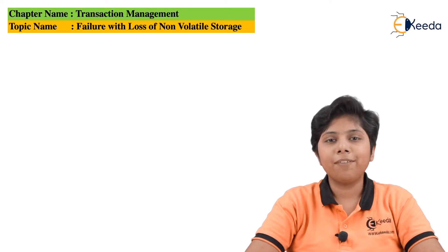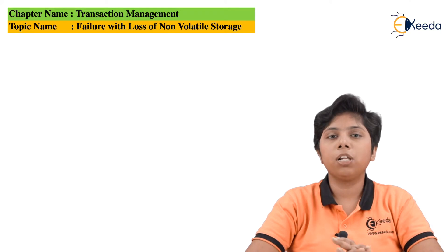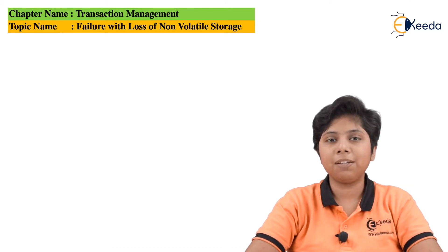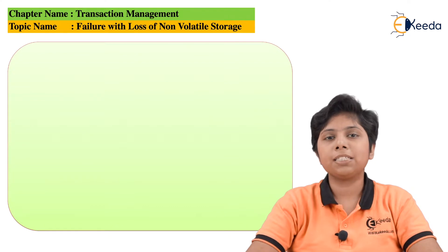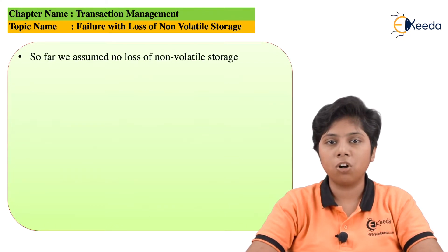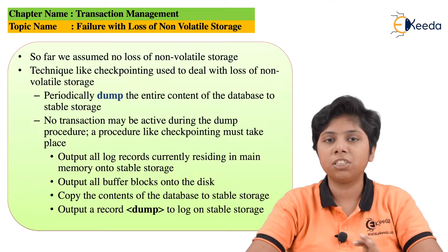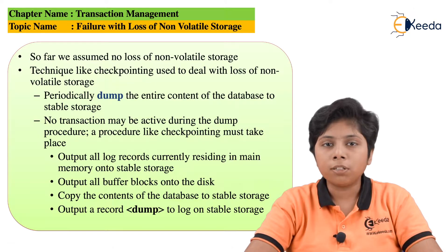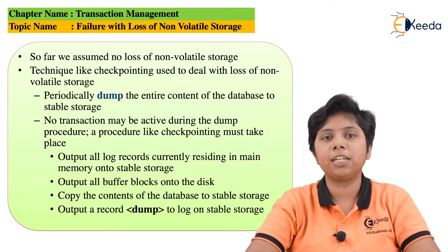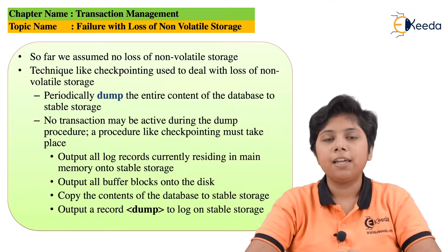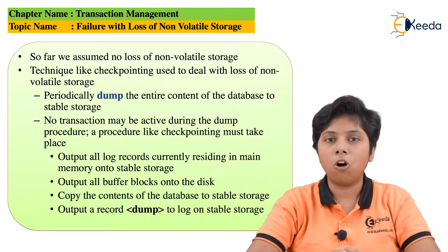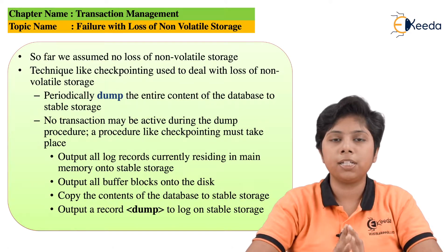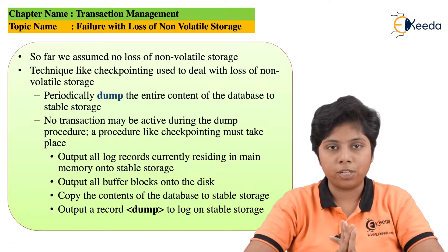Till now we have discussed the failure with only the volatile storage — that means if the data is residing in memory and it is interrupted by a transaction halt due to a logical error, a system error, or any system crash. But what happens if the stable storage that is storing the data is entirely halted or there is any fault in this non-volatile storage?